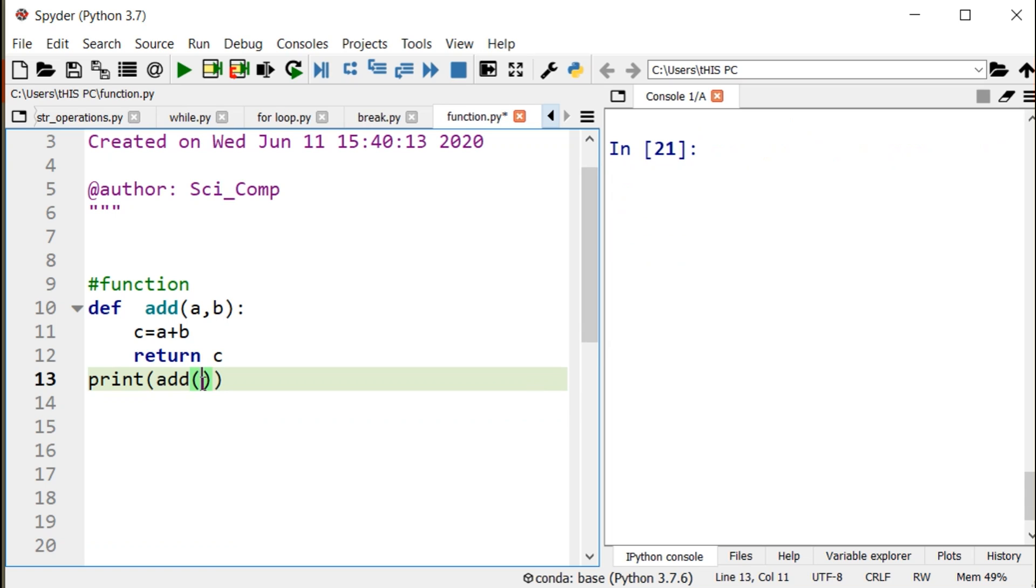Now the second case is when we pass the expression. If we pass 4 plus 7 and 7 minus 1, that is 11 for a and 6 for b. 11 plus 6 becomes 17. We run it and the answer is 17.